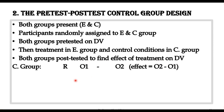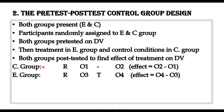Symbolically, we represent this with both the control group and experimental group having R, meaning individuals are randomly assigned in both groups and therefore the two groups are equal. O1 represents the pre-test in the control group, there is no treatment in the control group, and O2 is the post-test in the control group. For the experimental group, O3 is the pre-test, then treatment is offered, and O4 represents the post-test.